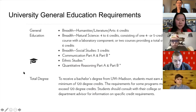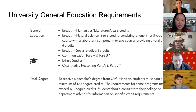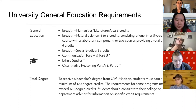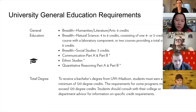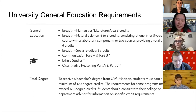The general education requirements — also called gen eds or UW requirements — are required of every UW-Madison student to graduate. This includes breadth courses: six credits in humanities, literature, or the arts; four to six credits in natural sciences; three credits in social science. You'll also need communication part A and B (English composition), three credits of ethnic studies, and quantitative reasoning part A and B, which covers math, calc, and physics.